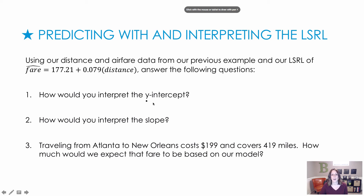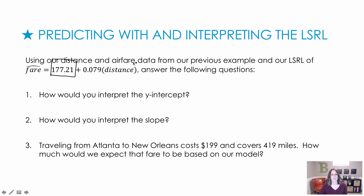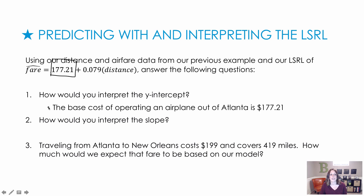How would we interpret the y-intercept of 177.21? On the last example I said 0 protein meant a certain fat content, but now I'm looking at airfare. I can't say if I travel zero miles it costs $177.21. Instead, I might interpret this as the base cost of flying out of Atlanta — the operating costs just to have the airport and fly from there.